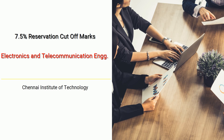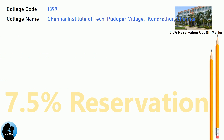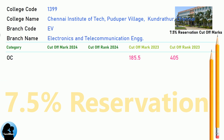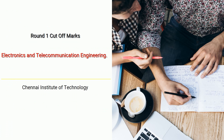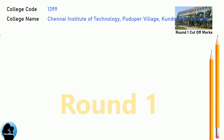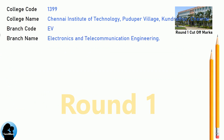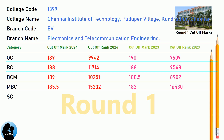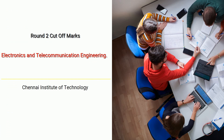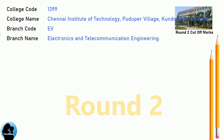DNA 7.5 Reservation Cut-off for Chennai Institute of Technology in Electronics and Telecommunication Engineering. DNA Round 1 Cut-off and Round 2 Cut-off for Chennai Institute of Technology in Electronics and Telecommunication Engineering.